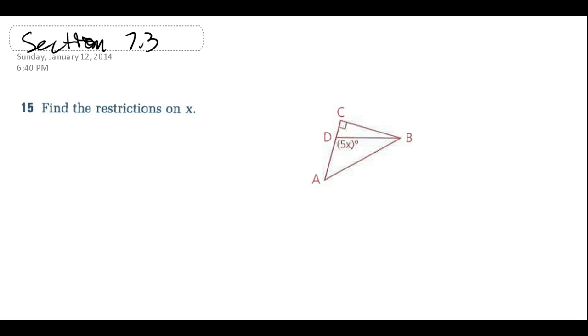So if we take a look at triangle DCB, that's this little skinny one here, we know it's a right angle. And we also know that the 5x is an exterior angle. So we know that the exterior angle has to be more than either remote interior angle. So that means that the 5x has to be more than the 90, and if we solve this for x, we know that x has to be more than 18.